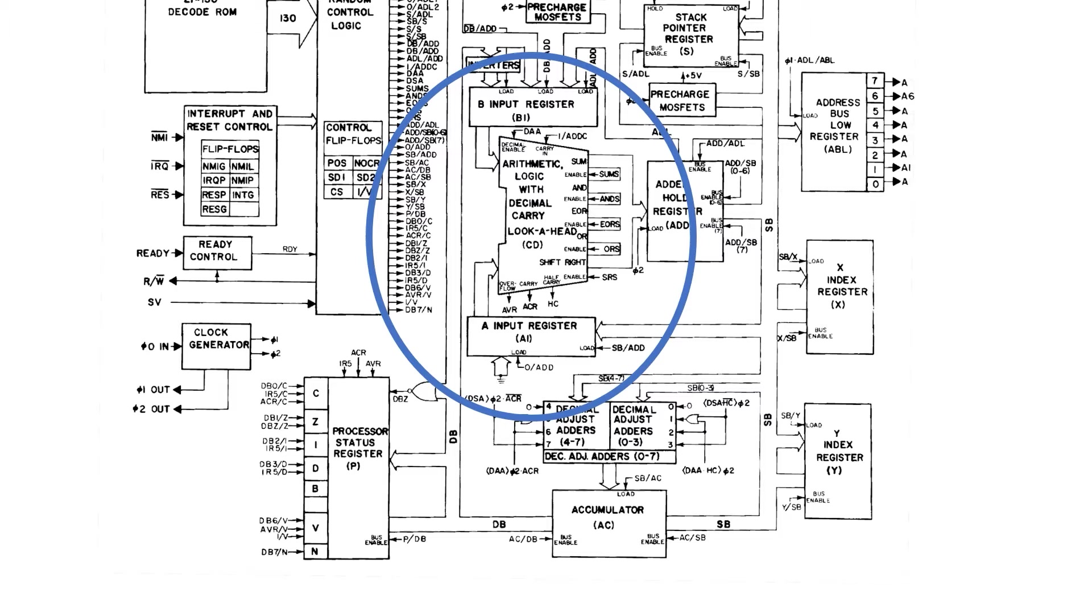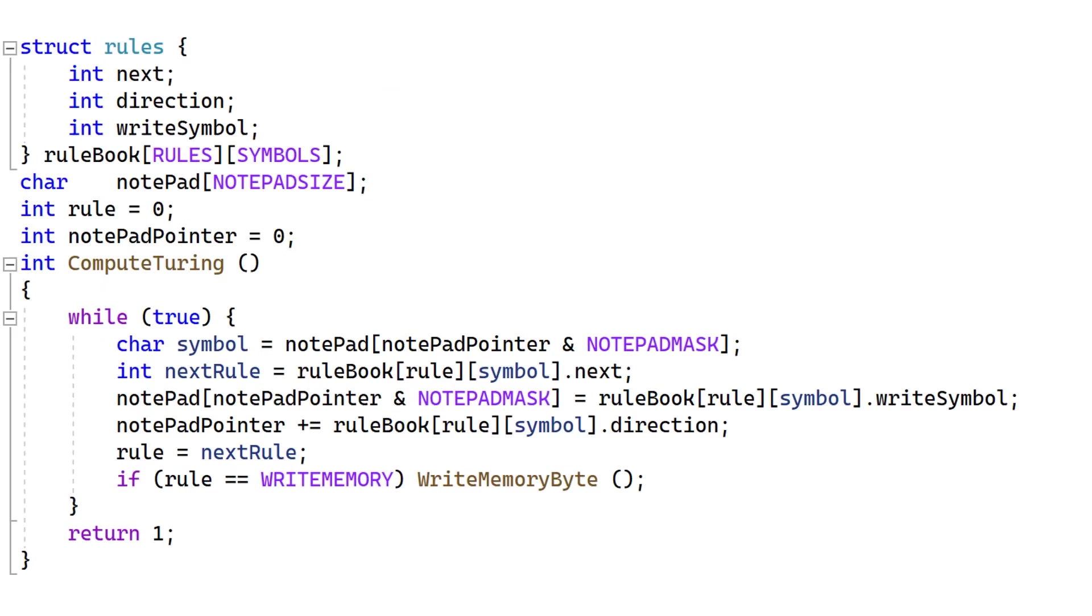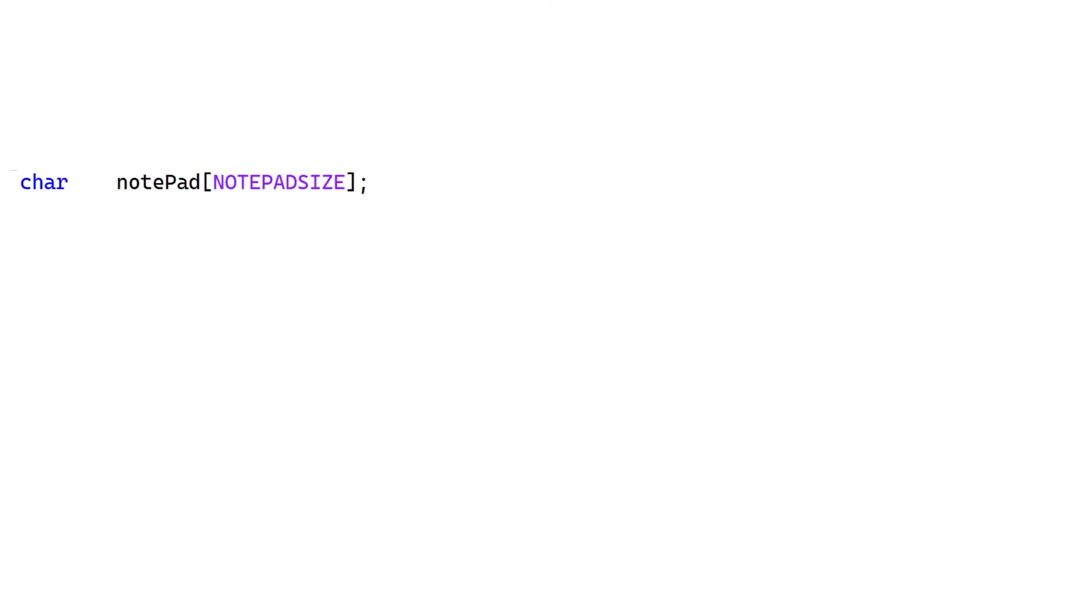We have the A register and the B register, which are actually both hidden from the user, but these are used to feed the ALU. And then down to the left, we have the status register. Well, it is possible to emulate all of these with just these lines of code. Let's take a look at the notepad, which is just a large one-dimensional array of bytes. Essentially, it's the same as a memory chip.